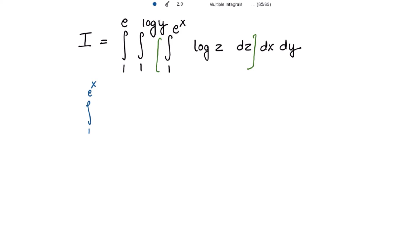The innermost integral has limits from 1 to e^x of log(z) dz. We will now put this value. We can write log(z) as log(z) times 1 and integrate by parts.